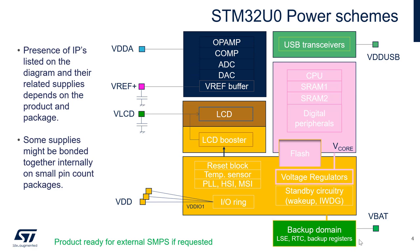The backup domain can be powered from VBAT or from VDD — if VDD is not present, it will switch to VBAT. This backup domain includes the LSE, the external 32 kHz crystal, as well as the RTC and the backup registers. Moving on to the V-core domain: it is powered from the voltage regulator, and it powers the flash, the CPU, the SRAMs, and the digital peripherals.